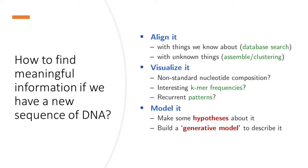So far we have seen different algorithms for read mapping. The next question is whether we can model a particular DNA sequence when we don't know anything about it — to predict what it is and what its function is based on certain aspects and models. For example, if we have a new sequence of DNA, one option is to align it so we can do a database search and infer what is already known about similar sequences.